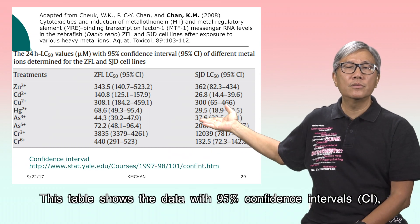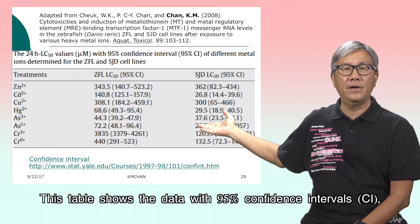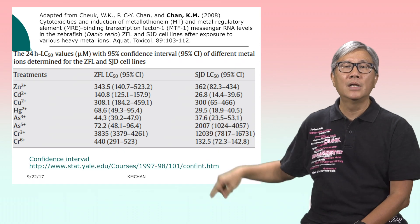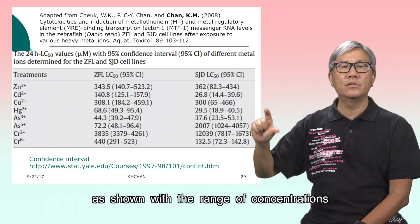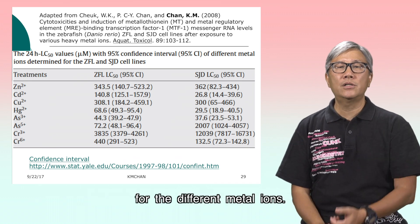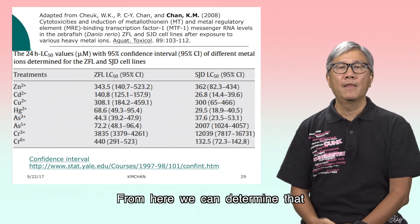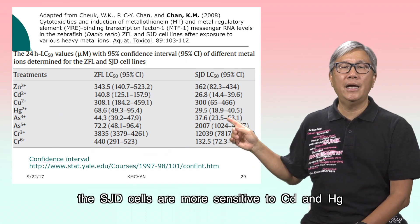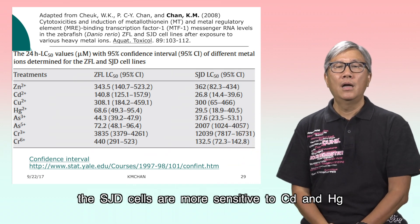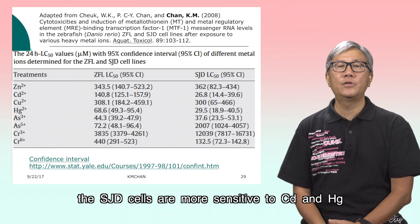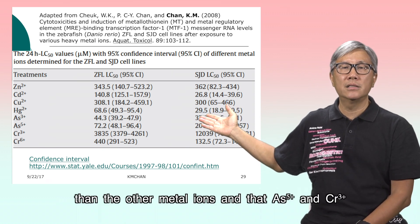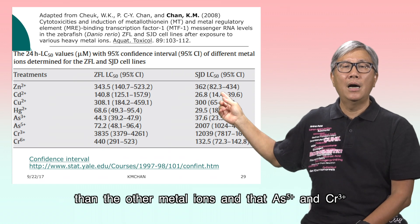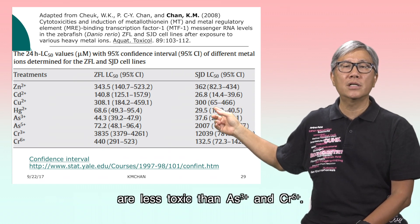This table shows the data with 95% confidence intervals (CI), with the range of concentrations for different metal ions. From here, we can determine that the SJD cells are more sensitive to cadmium and mercury than the other metal ions, and that arsenic-5 and chromium-3 are less toxic than arsenic-3 and chromium-6.